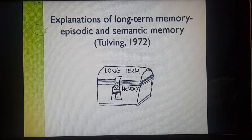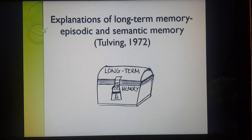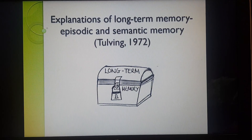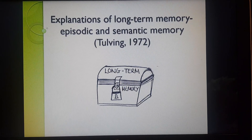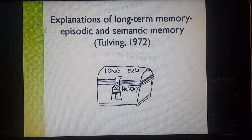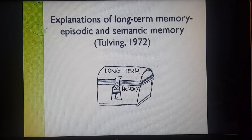Hi everyone. Today we're going to look at another explanation of memory — specifically explanations of long-term memory: episodic and semantic memory, which was a theory proposed by Tulving in 1972.